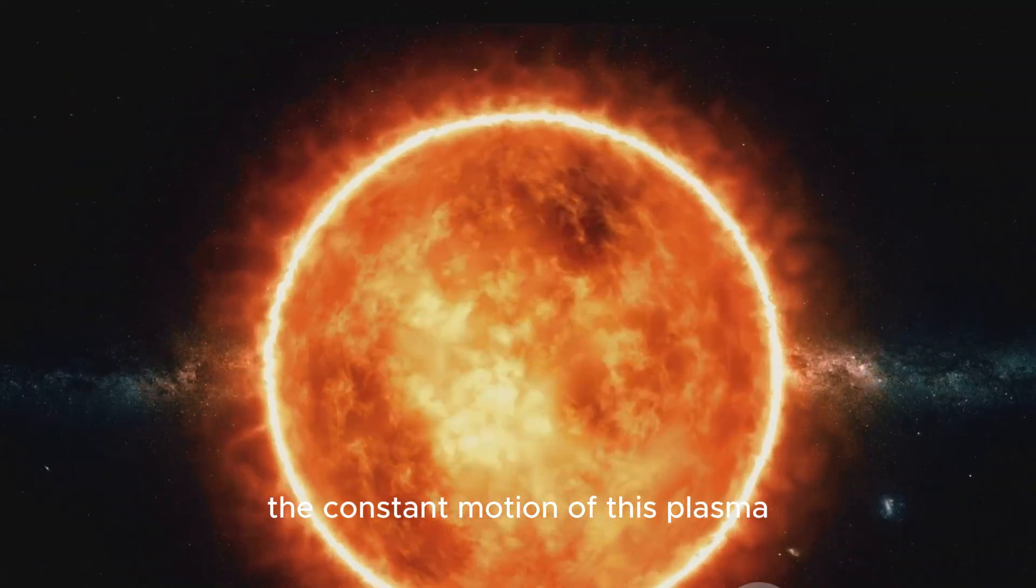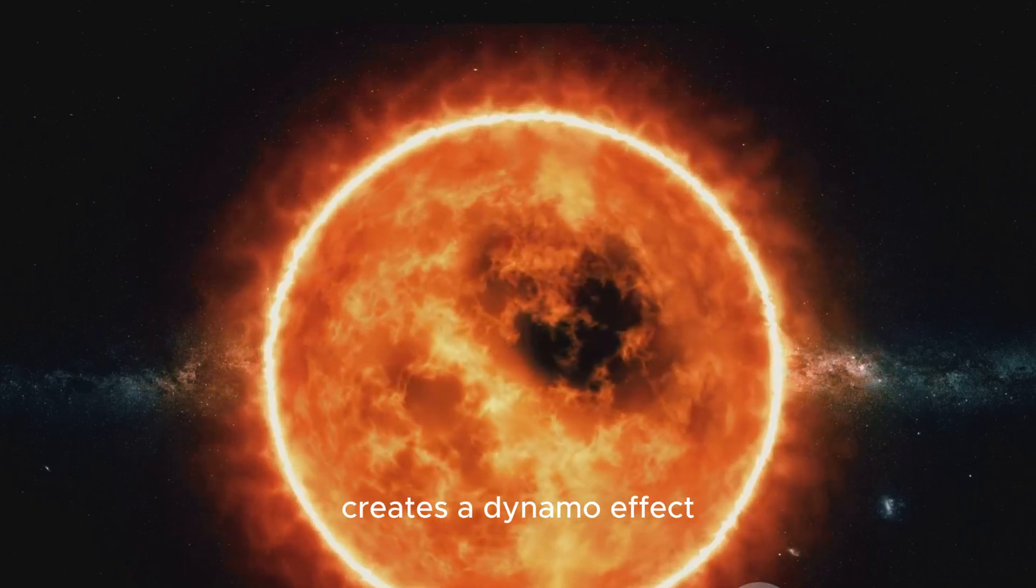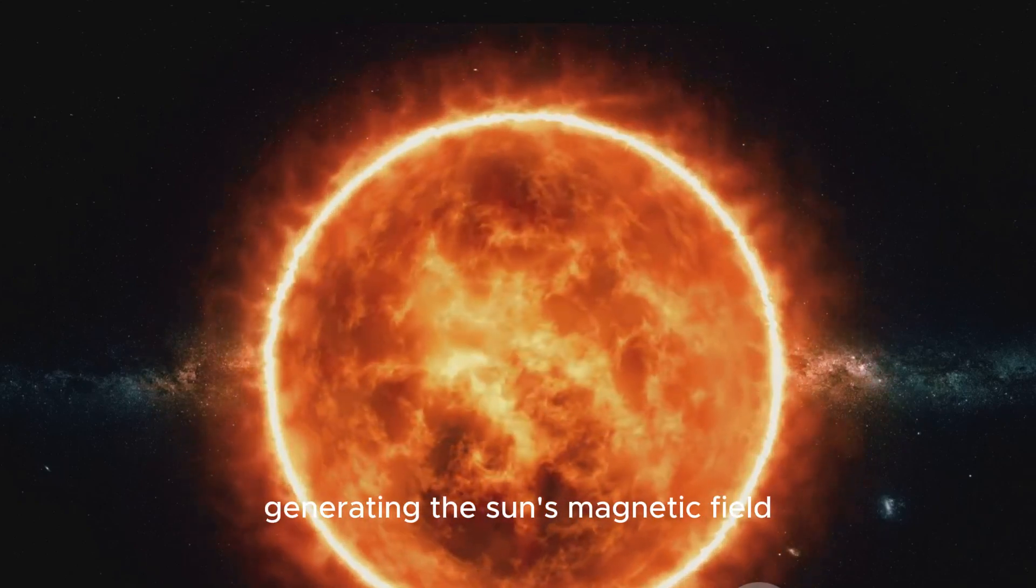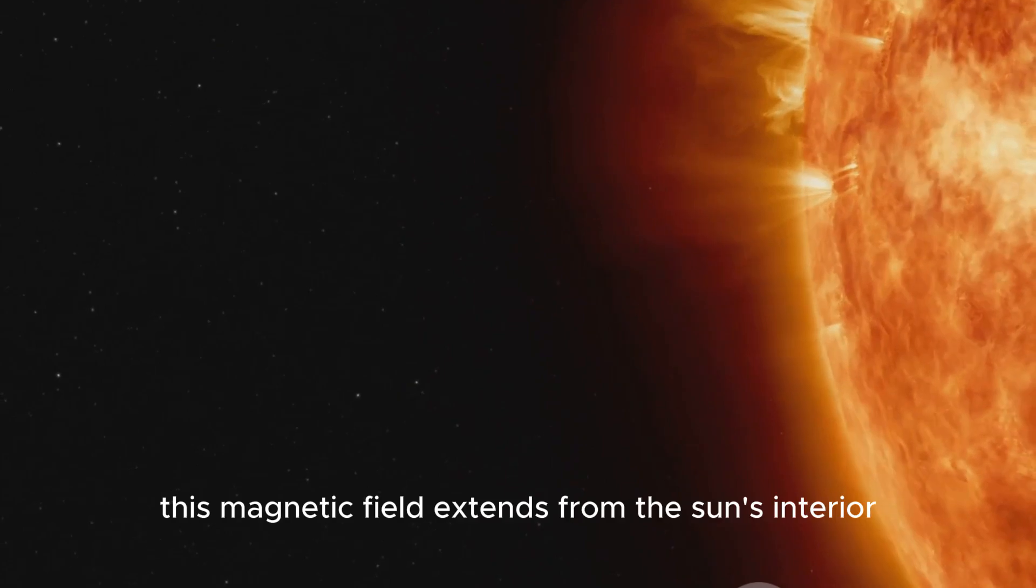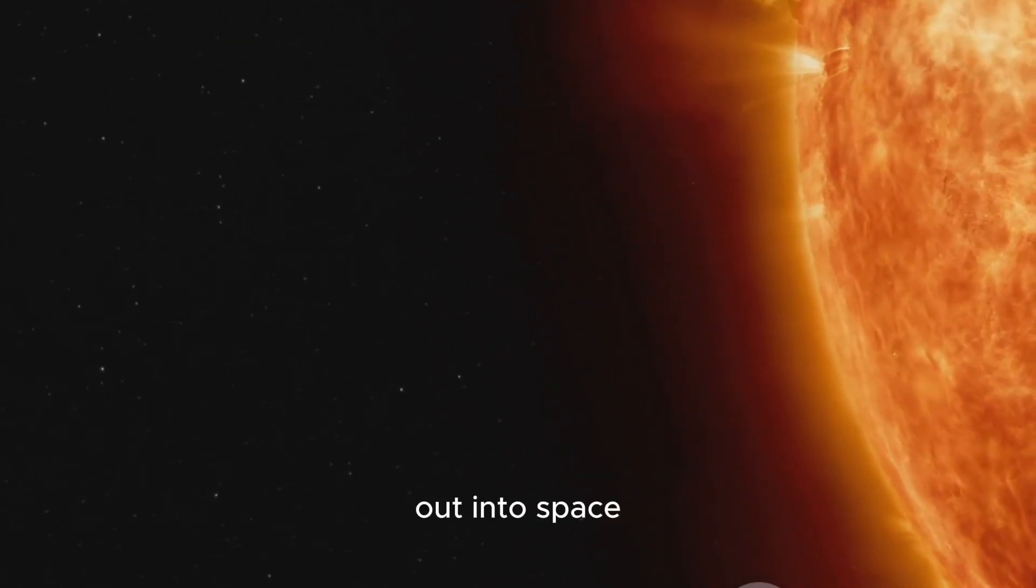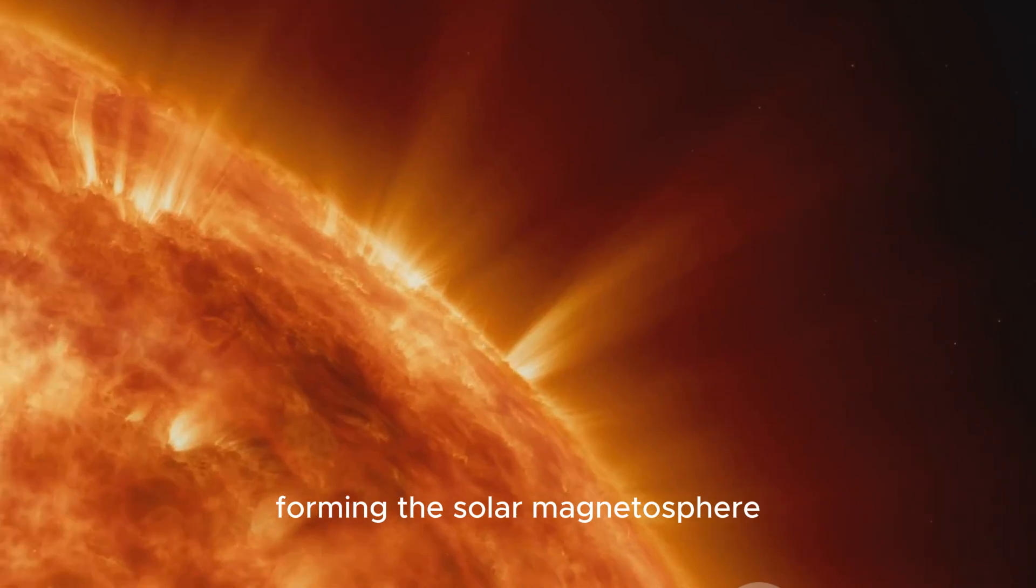The constant motion of this plasma, combined with the sun's rotation, creates a dynamo effect, generating the sun's magnetic field. This magnetic field extends from the sun's interior, out into space, forming the solar magnetosphere.